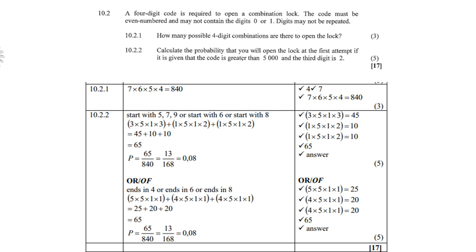10.2, the counting principle. A four-digit code is required to open a combination lock. The code must be even numbered and may not contain the digits 0 or 1 — so remember: four digits, even numbered, no 0 or 1. Digits may not be repeated. Therefore the number of possible combinations is 7 times 6 times 5 times 4, which gives you 840.